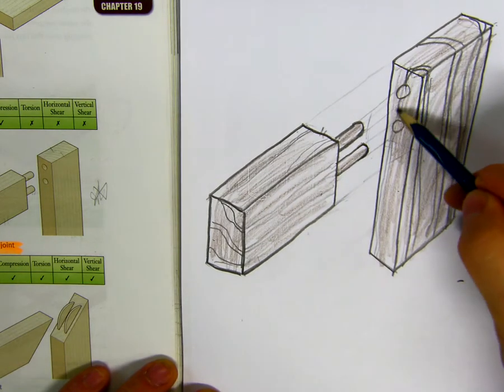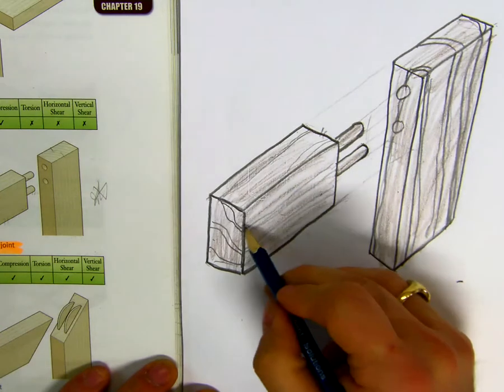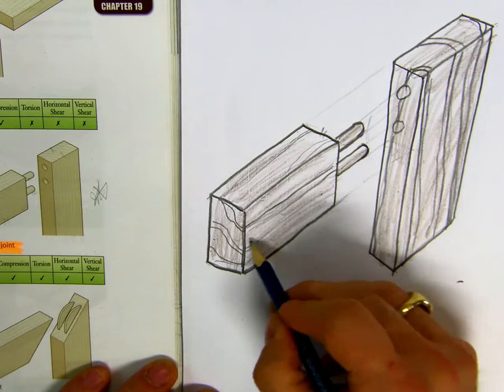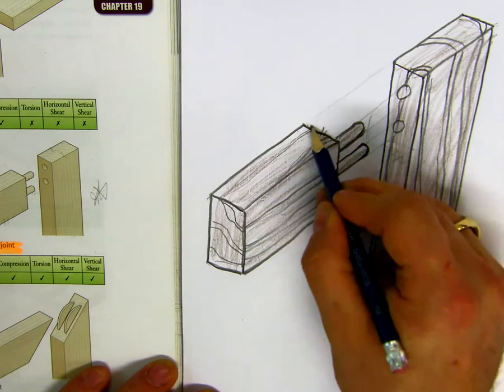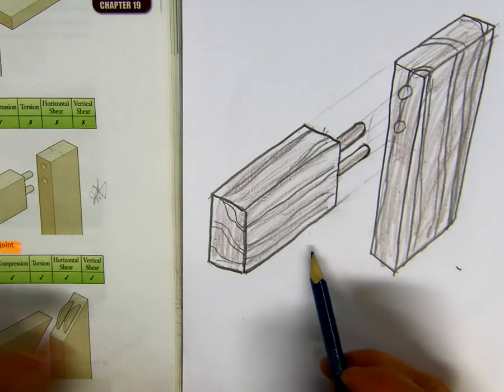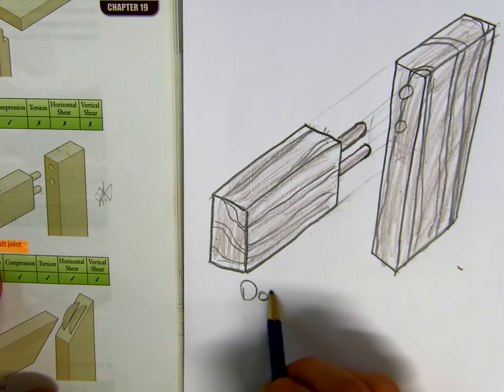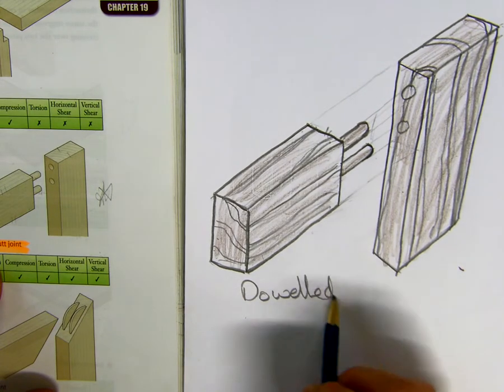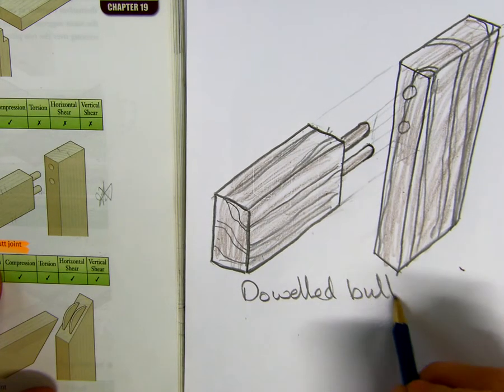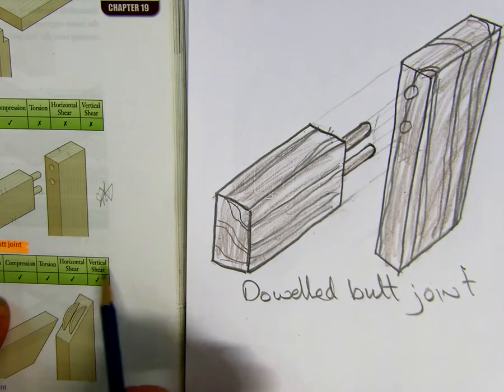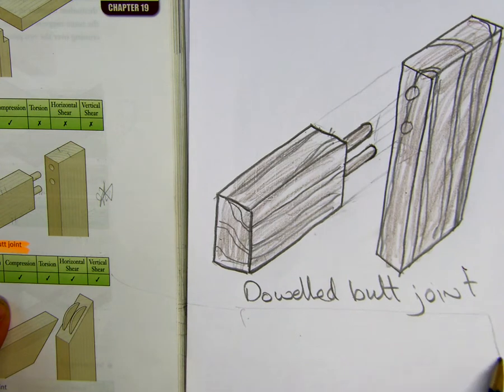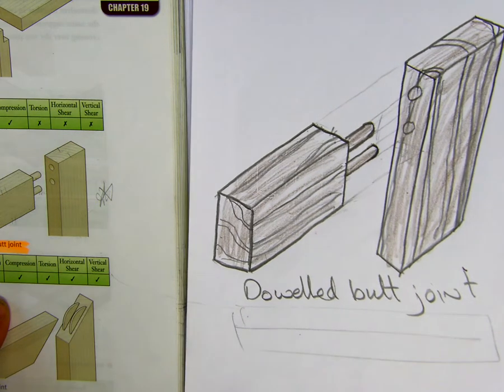So that's it then. We have dovetailed butt joint, so it's sketched, colored now, and it's labeled. And the only thing we're missing then is our box. We're going to put the box in here then on the bottom. Is that okay?